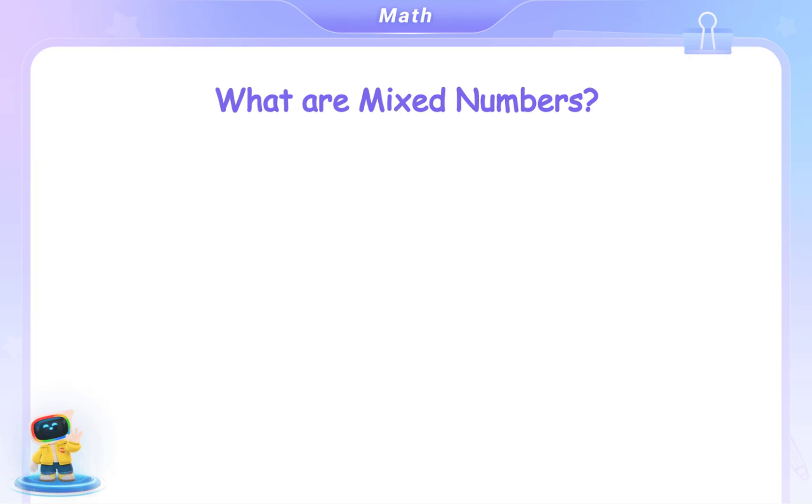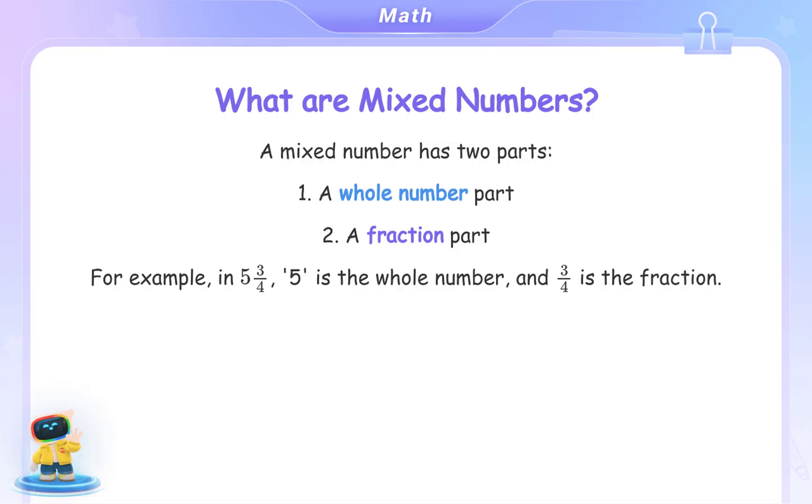What are mixed numbers? A mixed number has two parts. First, a whole number part. Second, a fraction part. For example, in 5 and 3 fourths, 5 is the whole number and 3 fourths is the fraction.